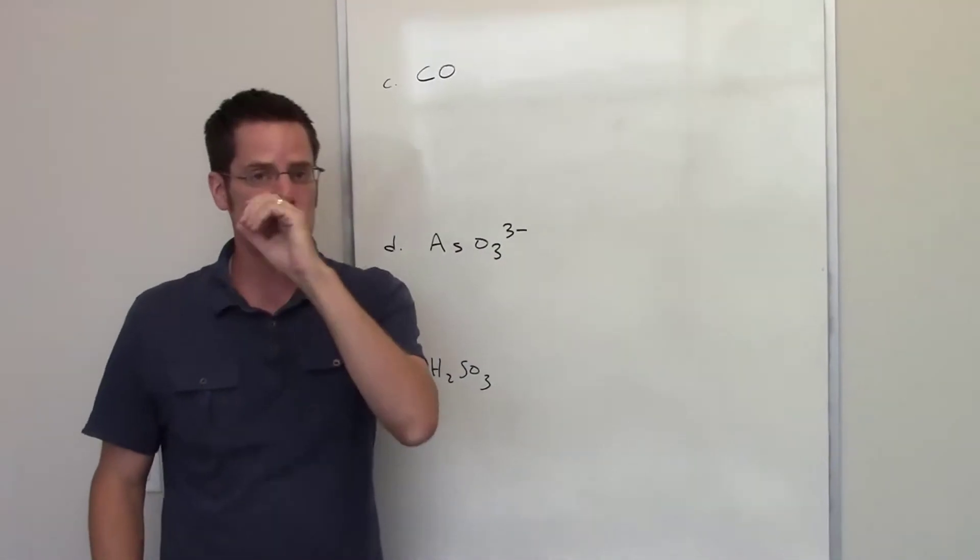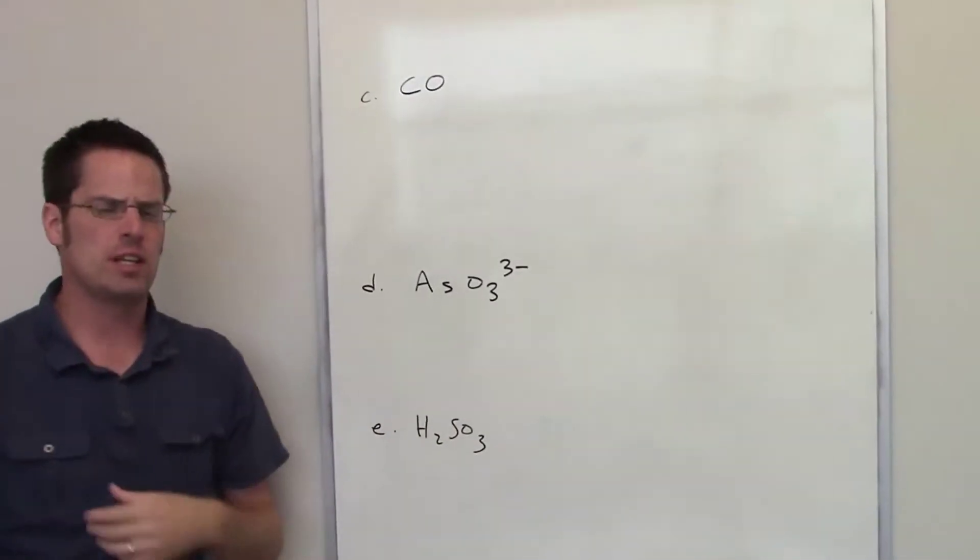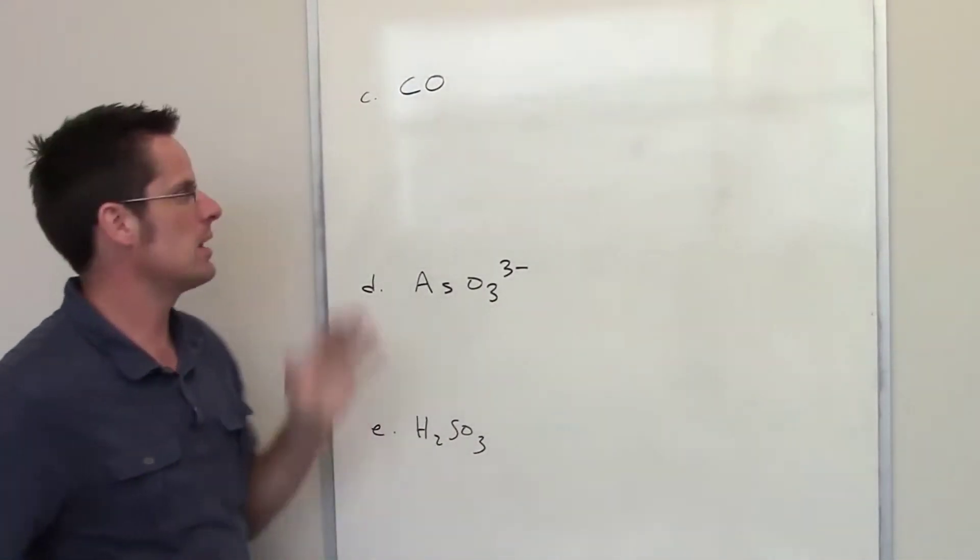This question asks us to draw Lewis structures for five different molecules. I'm not going to show you the answers to all of them, but I'll just do a couple of them.